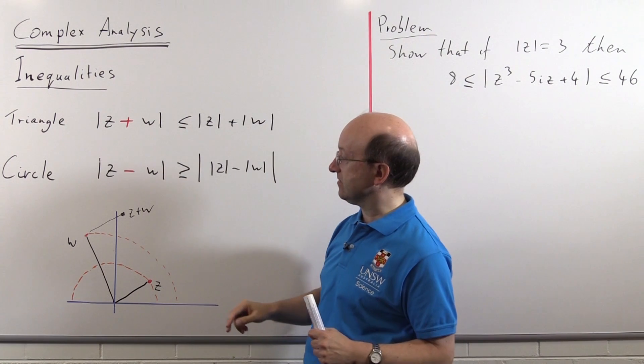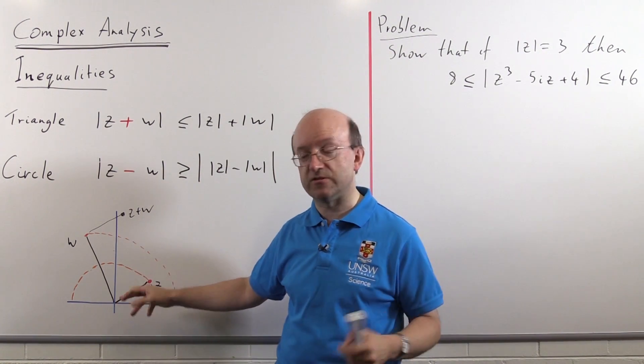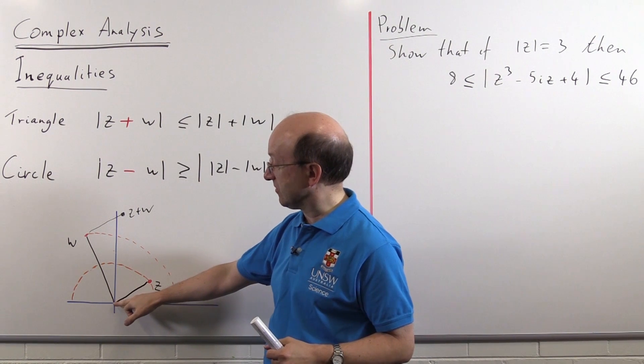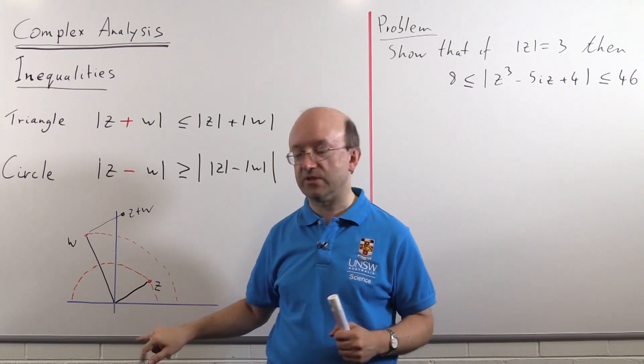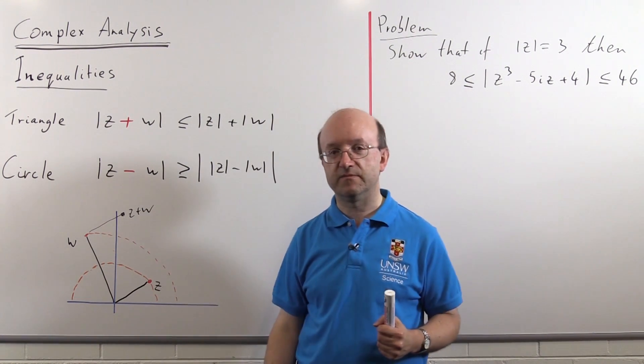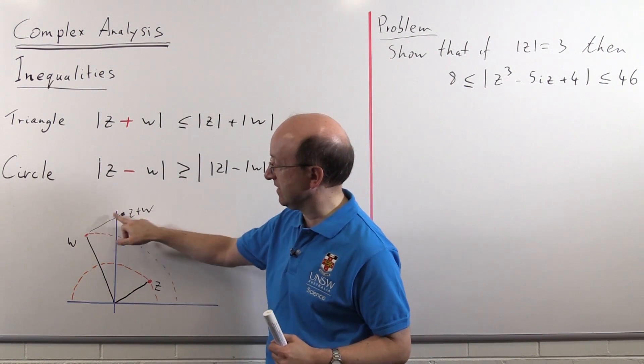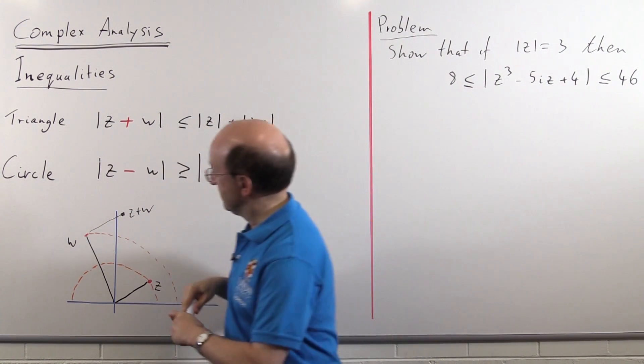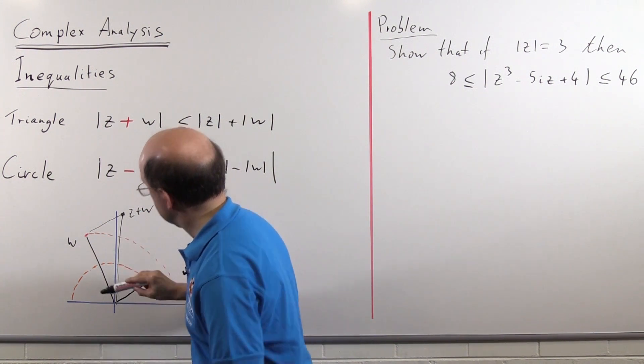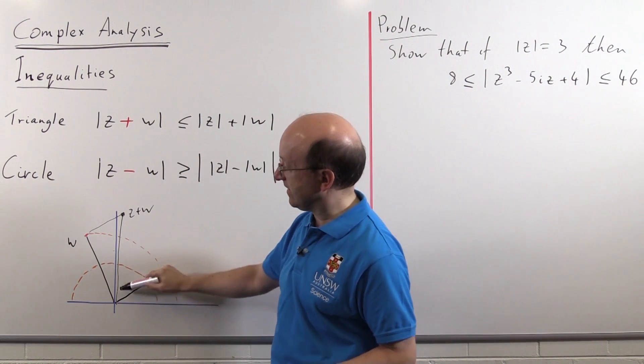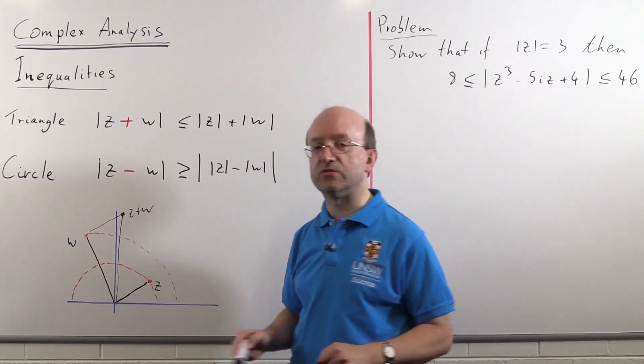And the triangle inequality says that modulus of z plus w, modulus remember is the distance from the origin, the distance from the origin here out to z plus w is less than the sum of the distance out to w plus the distance out to z. Because we've got a triangle here, if that is z, that triangle, I should fill it in I suppose. That length, that side of the triangle there, is shorter than the sum of the other two sides of the triangle.